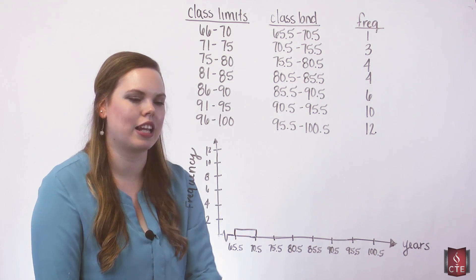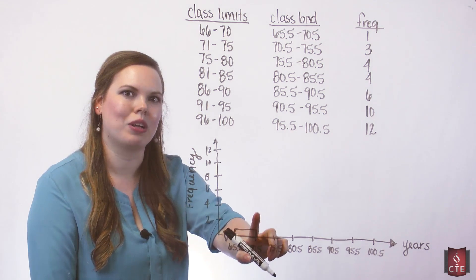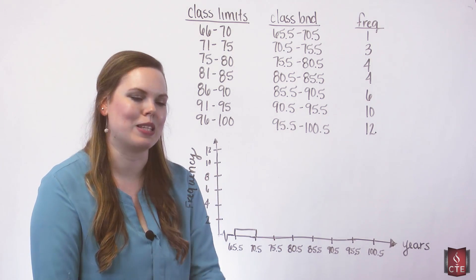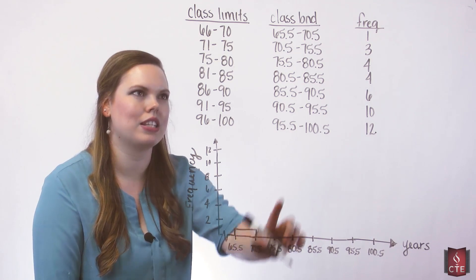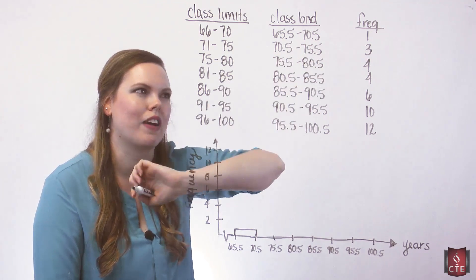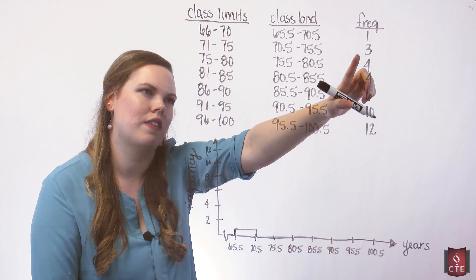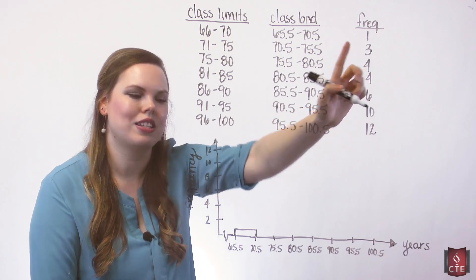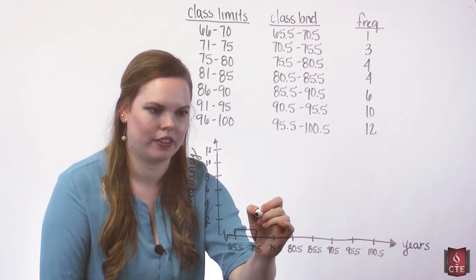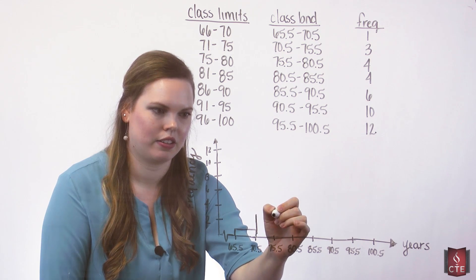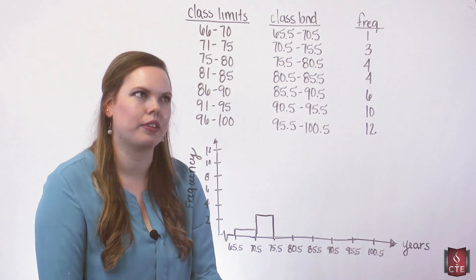So there's that first bar, and then the second bar is going to begin where the last one left off, so there's no space in between them. And it is between 70.5 and 75.5. The frequency is 3. So there's that bar up to 3.